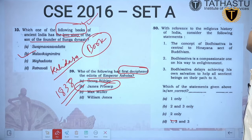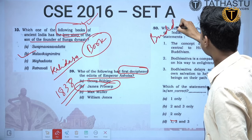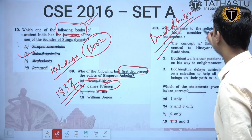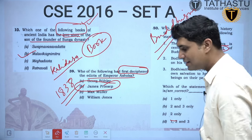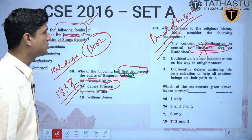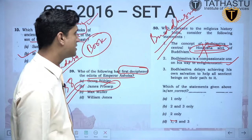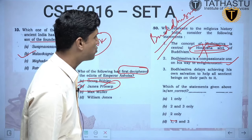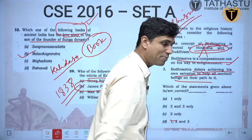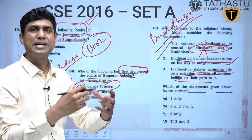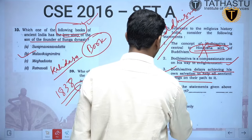The third question is related to Buddhism — a favourite area of UPSC. Regarding the concept of Bodhisattva: it is not central to Hinayana but to Mahayana sect. Bodhisattva is a compassionate one who delays achieving his own salvation to help all other sentient beings attain Nirvana. So statements 2 and 3 are correct.